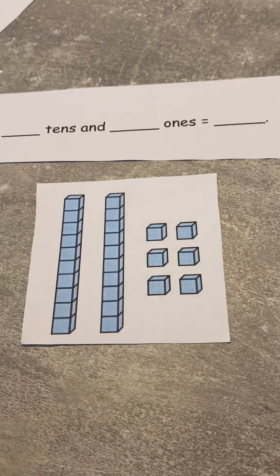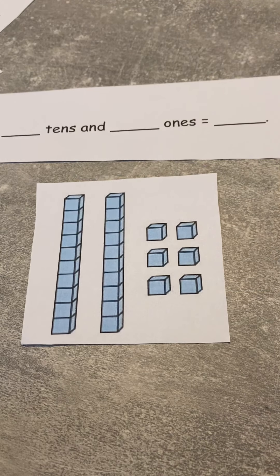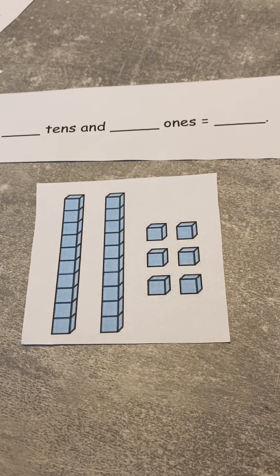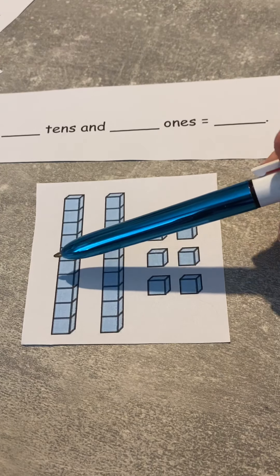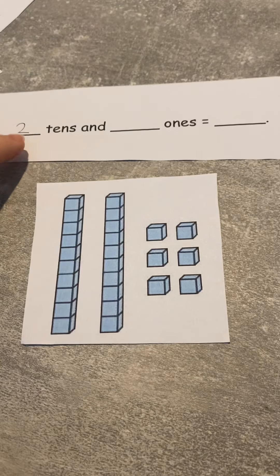So how many, we'll start with the tens. How many tens have I got? How many tens? Two, well done! So I've got one, two. So I'm going to write two there. So I've got two tens, two tens, two tens, because I've got one, two. Super!